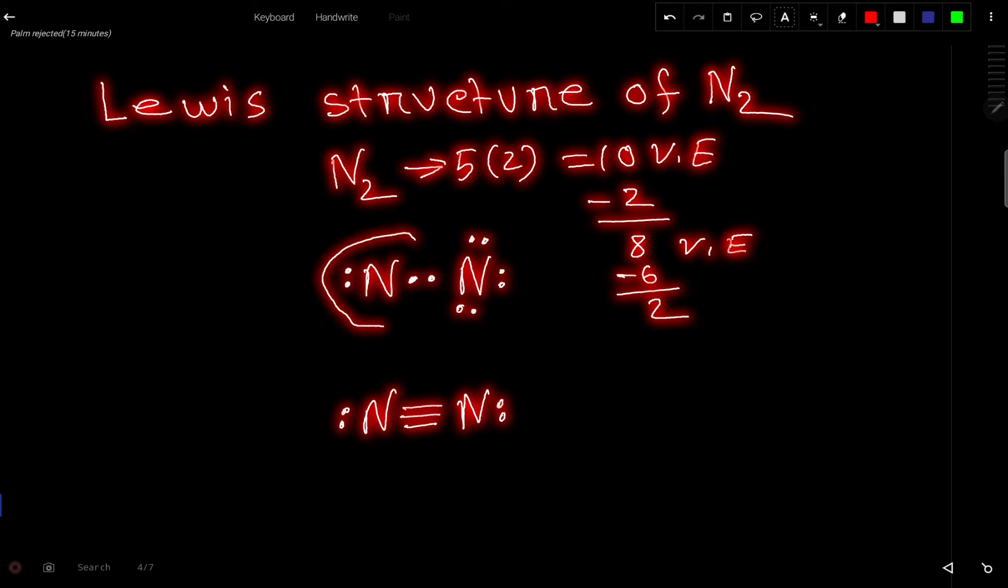So look, now this nitrogen has 4 valence electrons but this nitrogen has 8 valence electrons. Now we need to satisfy the octet for this nitrogen. So this nitrogen has 4, so it will take 4 more valence electrons. So we will move this lone pair as bond pair.